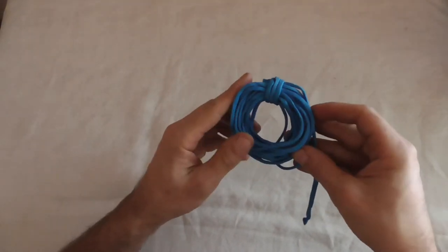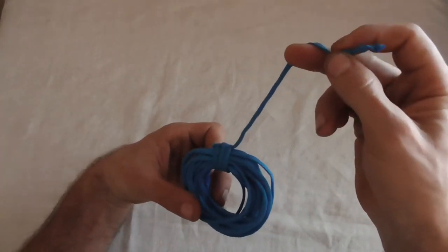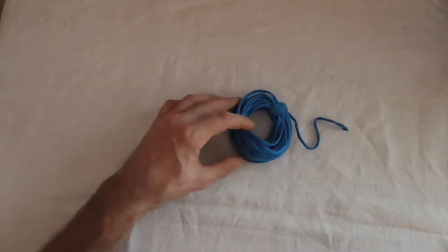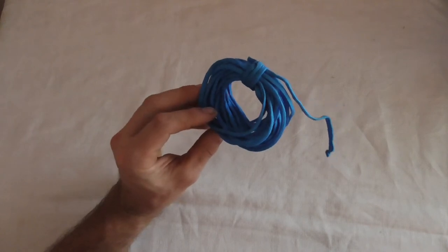And there you have your little coil. Now you can use this end to tie onto your backpack if you want, or you could throw that in your backpack and the next time you go to pull out your paracord it won't be a big birds nest.